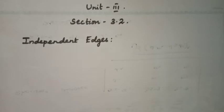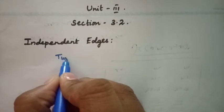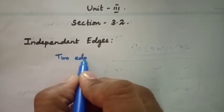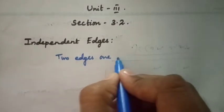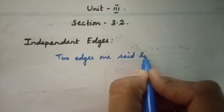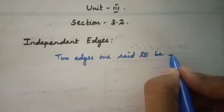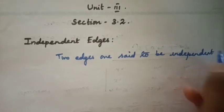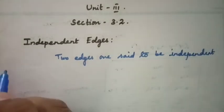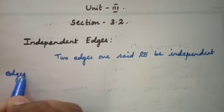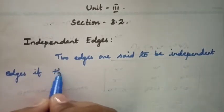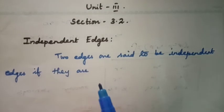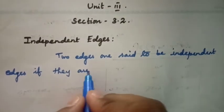Two edges are independent edges if they are non-adjacent edges.